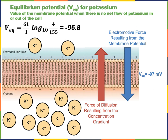Using the Nernst equation, we can calculate the equilibrium potential for potassium. Because the potassium concentration inside the cytosol is much higher than in the extracellular fluid, the force of diffusion drives potassium across the plasma membrane from the cytosol out into the extracellular fluid. Therefore, it would require a negative membrane potential to counterbalance the force of diffusion. The electromotive force equal and opposite to the force of diffusion for potassium occurs when the membrane potential equals negative 97 millivolts, the equilibrium potential for potassium.